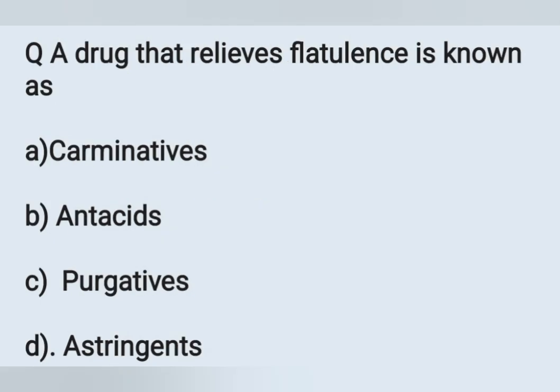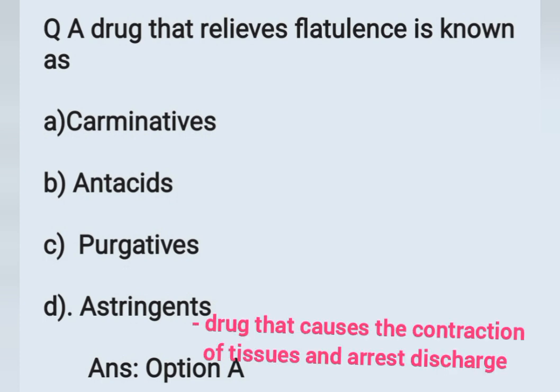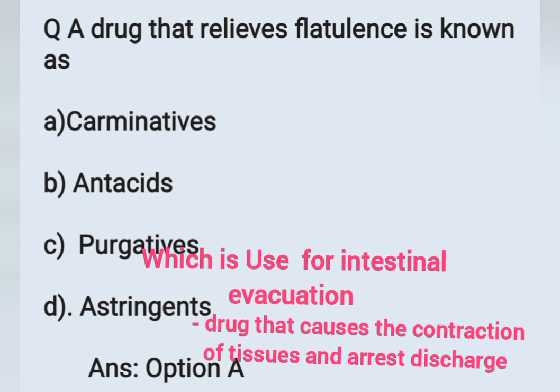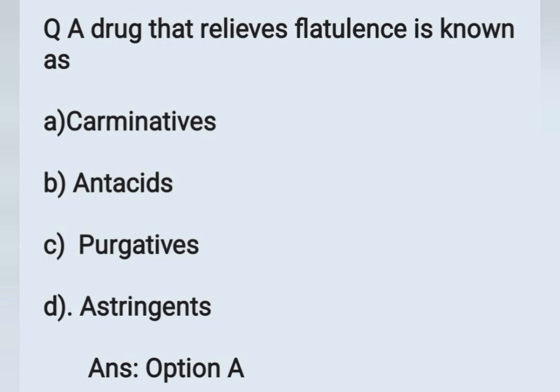The next question: a drug that relieves flatulence is known as. Options: A - carminatives, B - antacids, C - purgatives, D - astringents. Flatulence or gaseous distension is relieved by carminatives. Option A is the correct answer. Astringents are drugs that cause contraction of tissue and arrest discharges. Purgatives are used for intestinal evacuation. Carminatives are the drugs that relieve flatulence or gaseous distension. Antacids react with hydrochloric acid to decrease the activity of gastric secretions. Correct answer: option A.